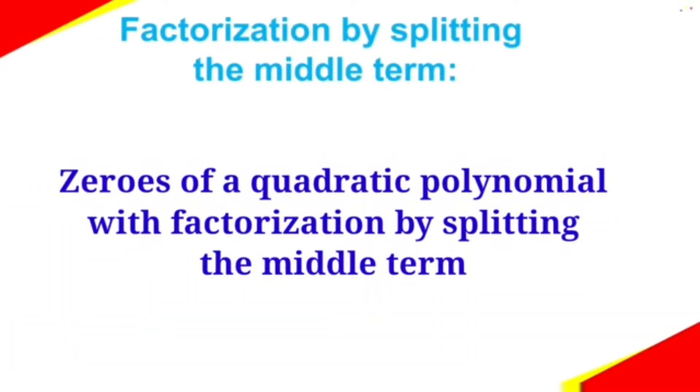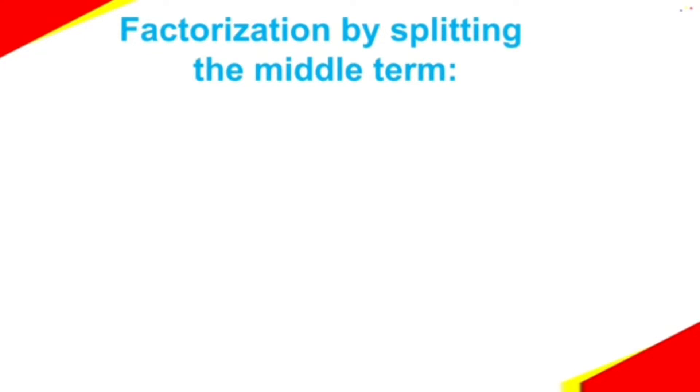Factorization by splitting the middle term. Let me explain by taking an example. Let us consider a quadratic polynomial x² + 7x + 12.